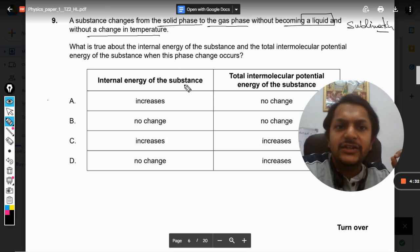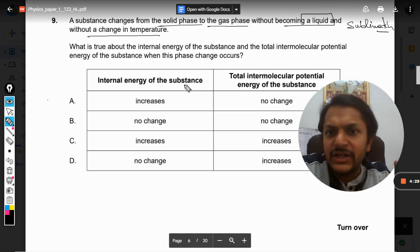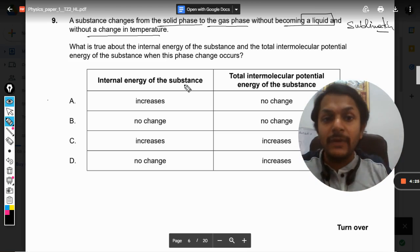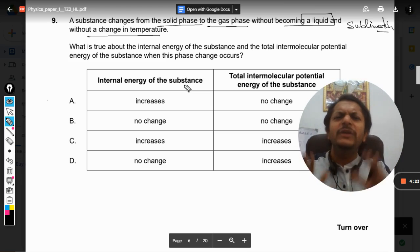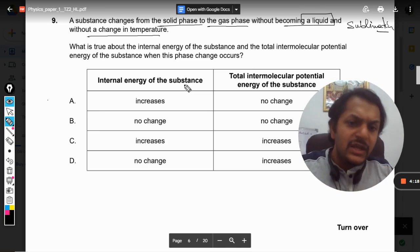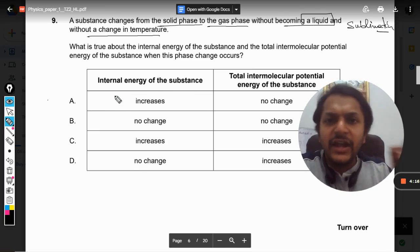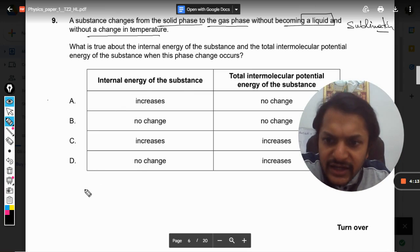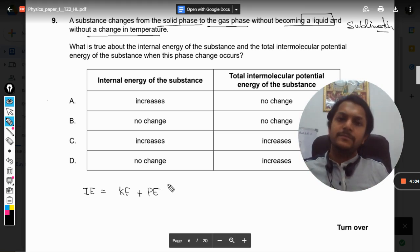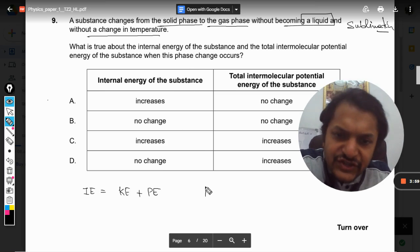And the total intermolecular potential energy of the substance when this phase change occurs? Well, there should not be any confusion. This is a very simple question. Internal energy is defined as the sum of kinetic energy of the molecules plus potential energy of the molecules. Now, when there is a phase change involved...